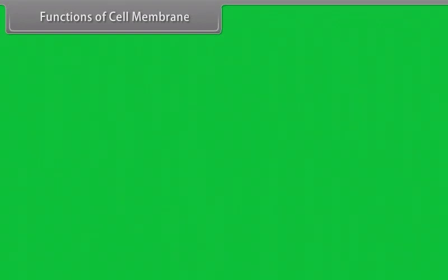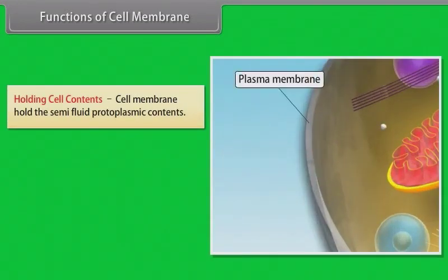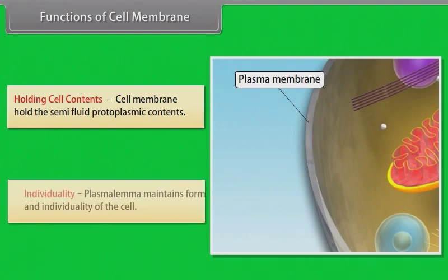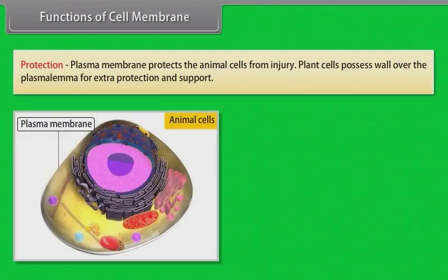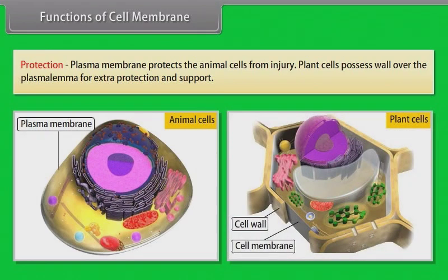Functions of cell membrane: Holding cell contents — the cell membrane holds the semi-fluid protoplasmic contents. Individuality — the plasmalemma maintains the form and individuality of the cell. Protection — the plasma membrane protects animal cells from injury; plant cells possess a wall over the plasmalemma for extra protection and support.